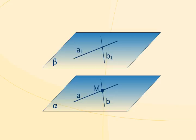The line A belongs to the plane alpha. The line A1 belongs to the plane beta, and the line A is parallel to the line A1. So, according to the criterion of parallelism of a straight line and a plane, the line A is parallel to the plane beta.